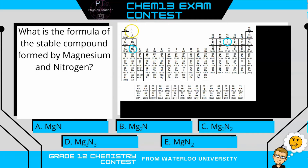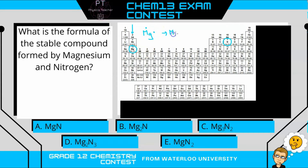Magnesium is in our alkaline earth metals right here, and that means if you were to draw its Lewis structure it would have two valence electrons. Since it's easier to lose two than to gain six, it will end up with a plus two ion, Mg²⁺.